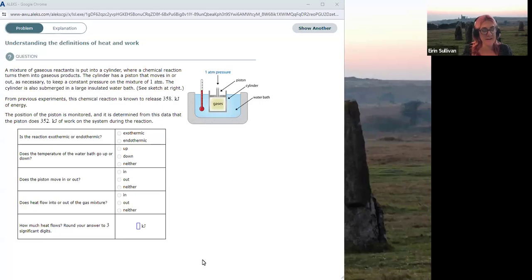We're going to look at understanding the definitions of heat and work again, just to make sure we've seen a few different versions of whether the system is doing work or having work done to it, or if the system is absorbing heat versus releasing heat. So again, we're looking at that expression that delta E is the sum of Q, the heat, plus W.